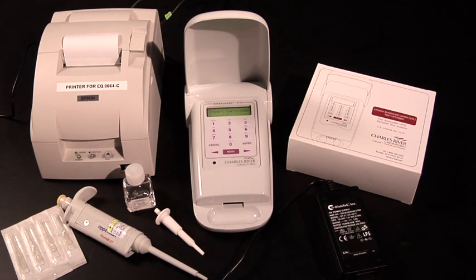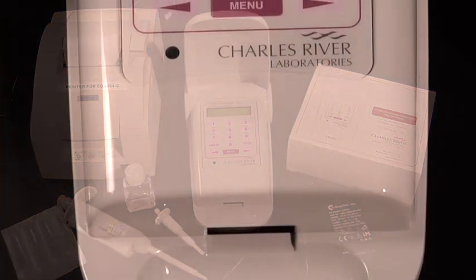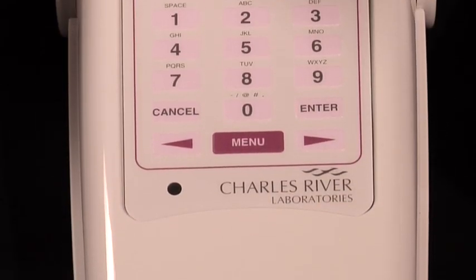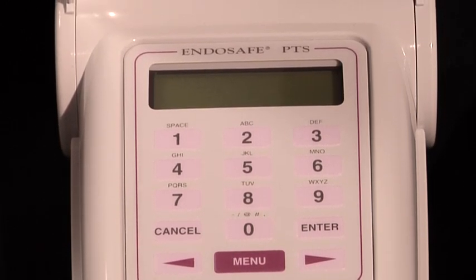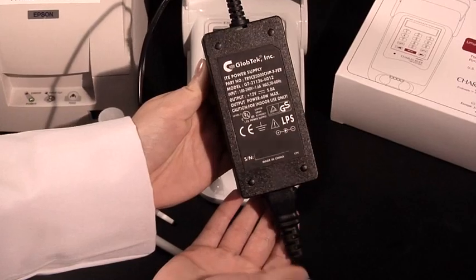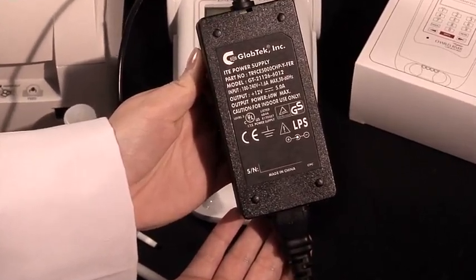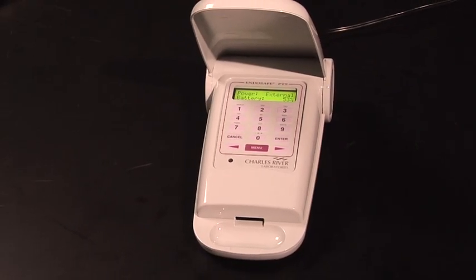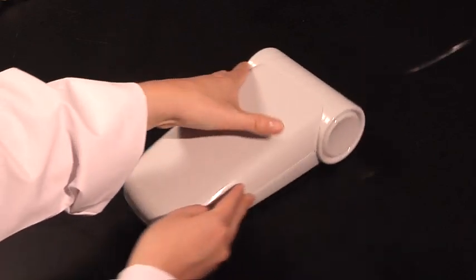In order to begin your testing, you will need several different items. First, you will need your EndoSafe PTS unit. You will also need the power supply and adapter cord for charging the PTS. It is highly recommended before beginning your test that the unit has been completely charged.